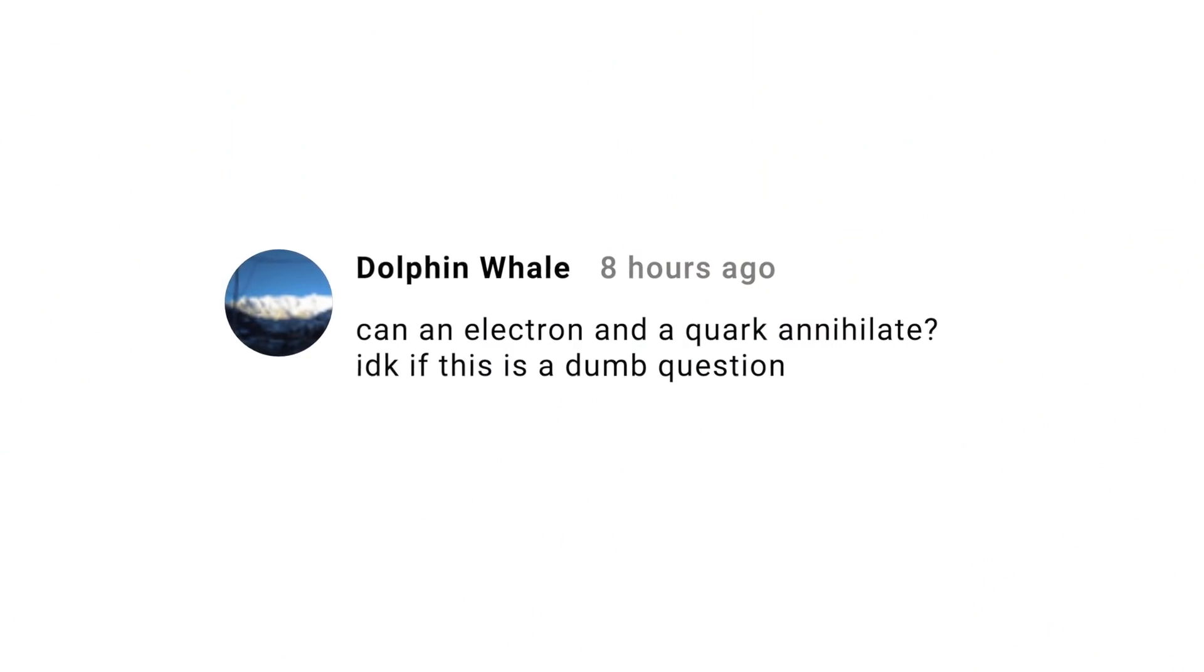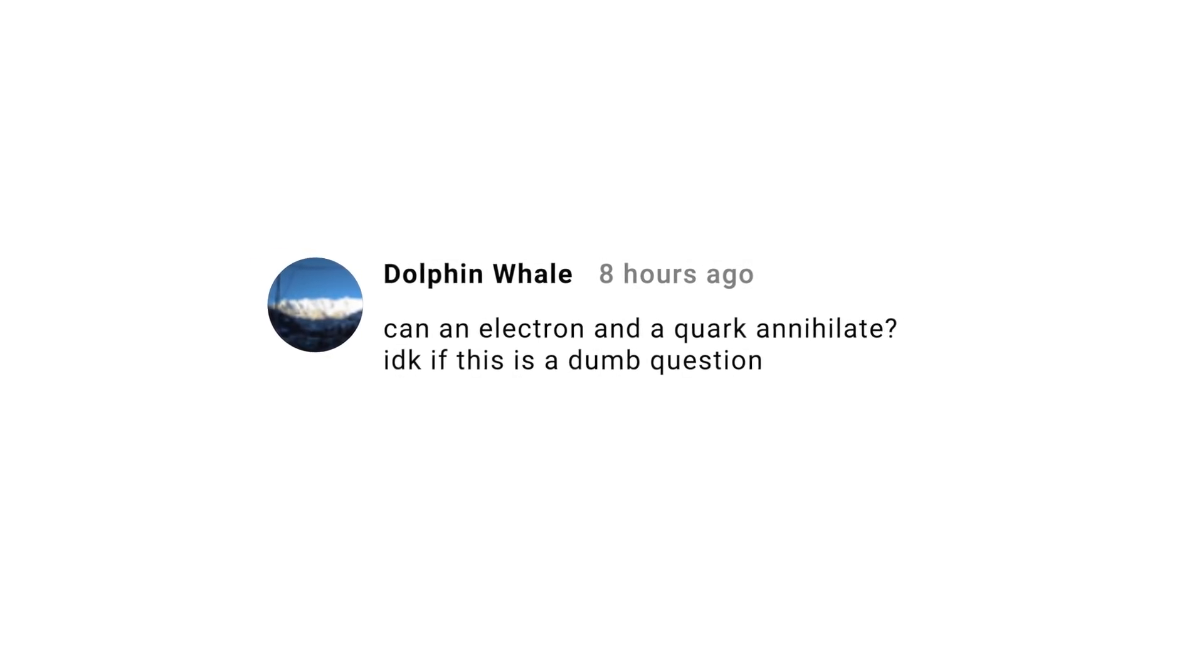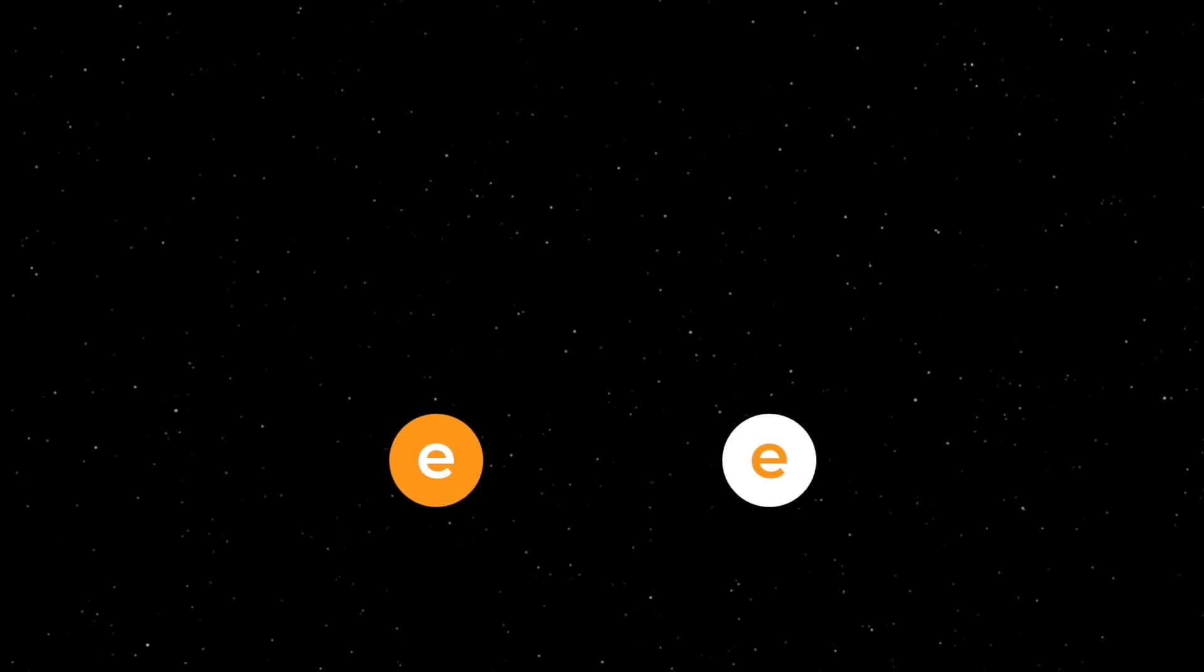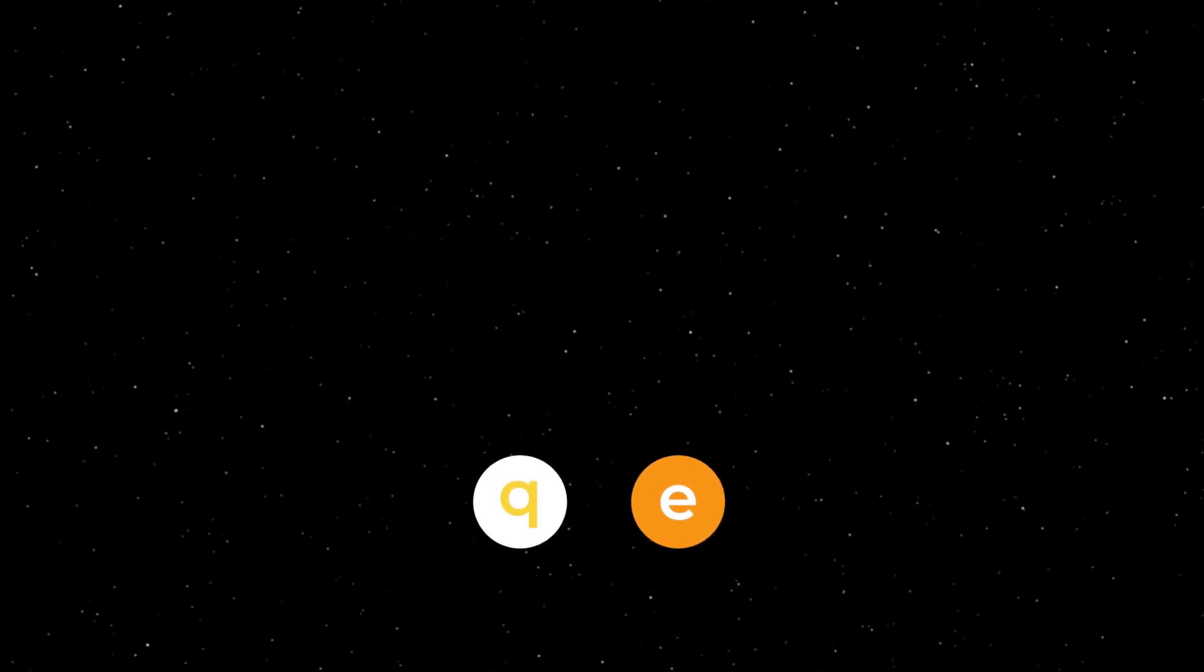Dolphin Whale asks, can an electron and a quark annihilate? And I don't know if this is a dumb question. That's not a dumb question at all. But it turns out the answer is no. The only things that can annihilate when you have matter and antimatter particles is when they're the same. So a quark and an antimatter quark can annihilate, an electron and an antimatter electron can annihilate. But a quark cannot annihilate an antimatter electron, nor can an electron annihilate an antimatter quark. Just can't happen.